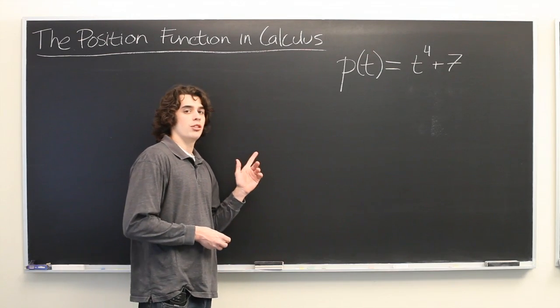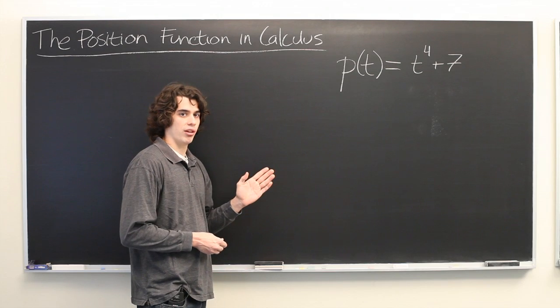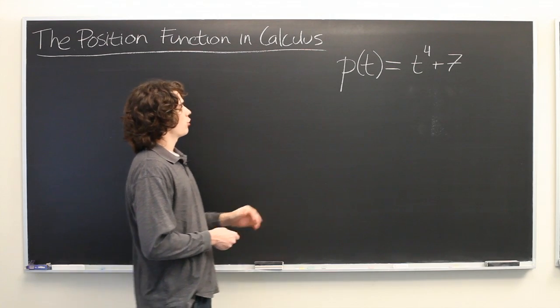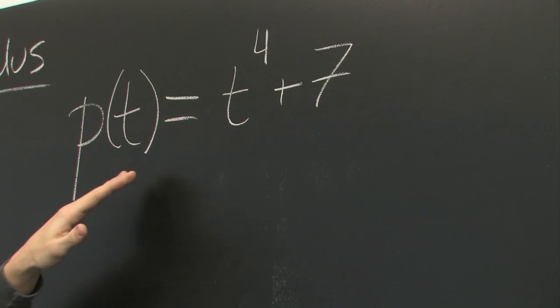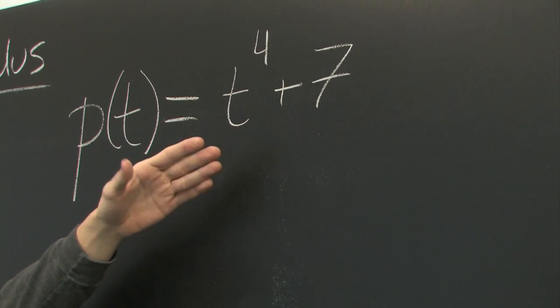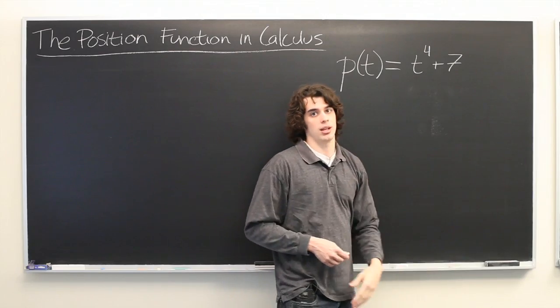The position function is interesting because the derivatives of the position function have very definite, clear meanings. So here we have p of t, the position of some particle with respect to time of the variable t. We have t to the fourth power plus seven.